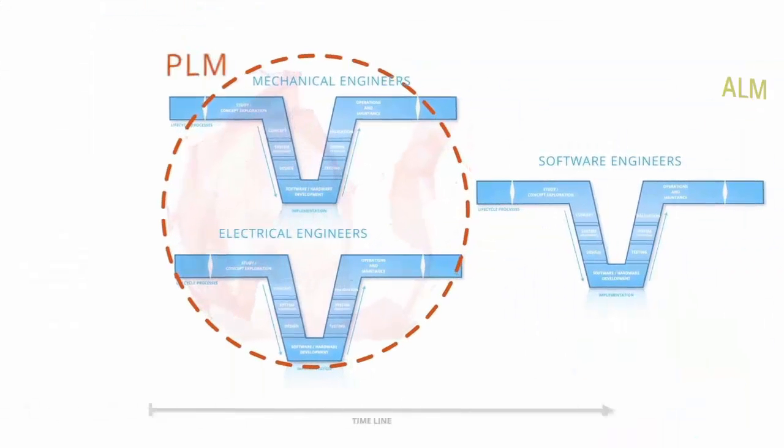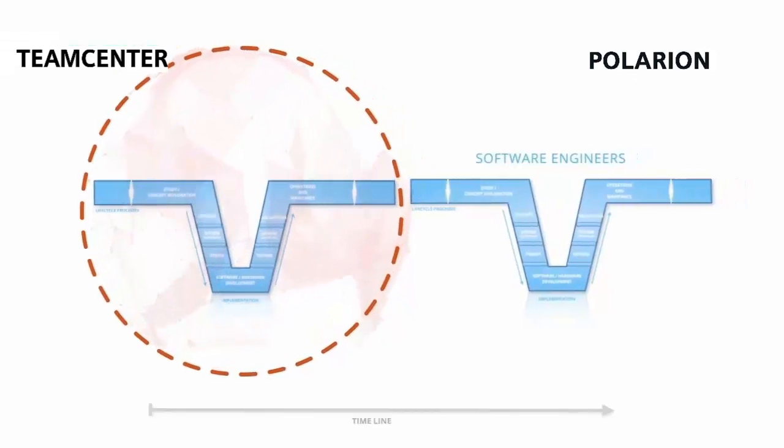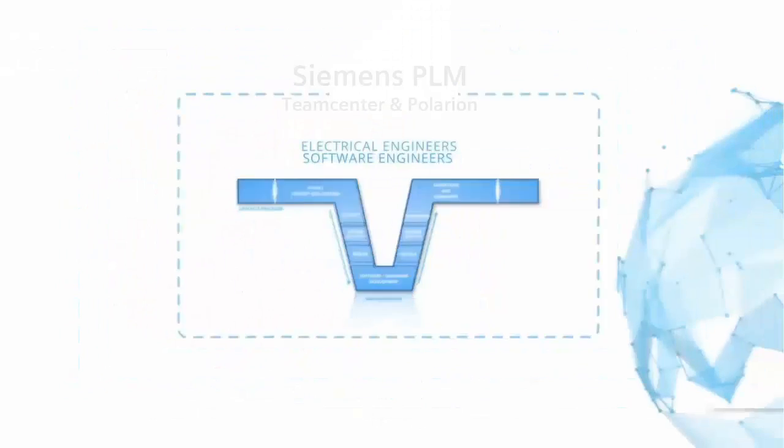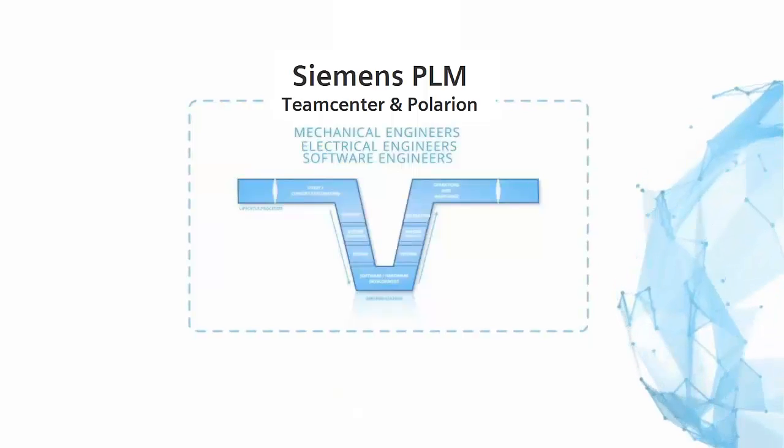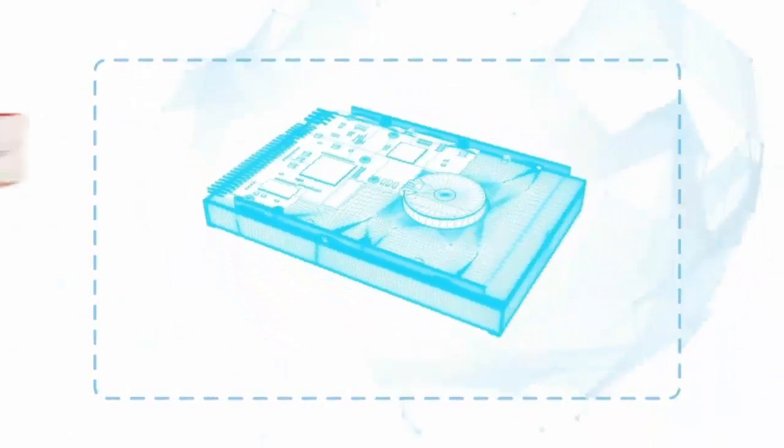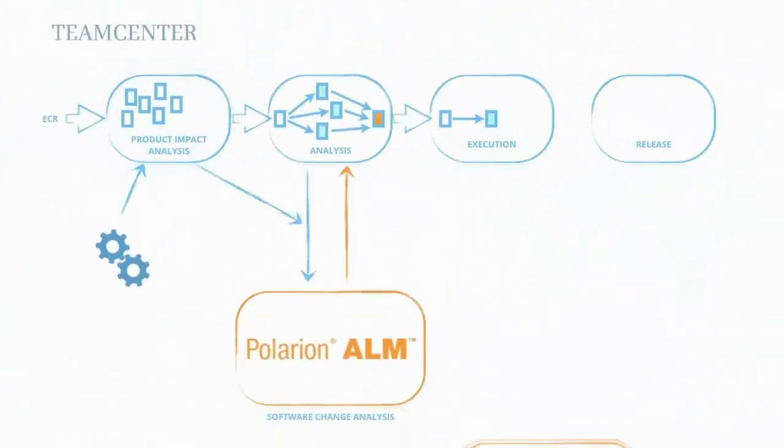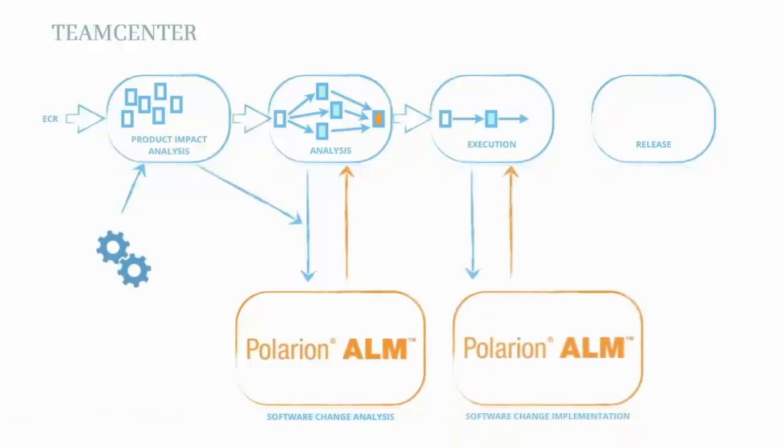When used in conjunction with Siemens PLM, Polarion ALM brings software engineers into the loop with their electrical and mechanical counterparts, synchronizing lifecycle management efforts. Integrating Polarion ALM into Siemens PLM enables bidirectional linking between product and corresponding software artifacts. As a result, the impact of any product change can be automatically propagated to all corresponding software code, triggering analysis and adjustment.